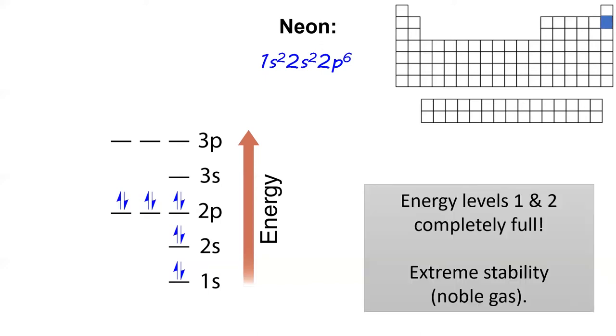Neon, element 10, puts its tenth electron in the last open 2p orbital. Notice that neon's first and second energy levels are completely filled. This gives neon the characteristic chemical stability of all the noble gases.